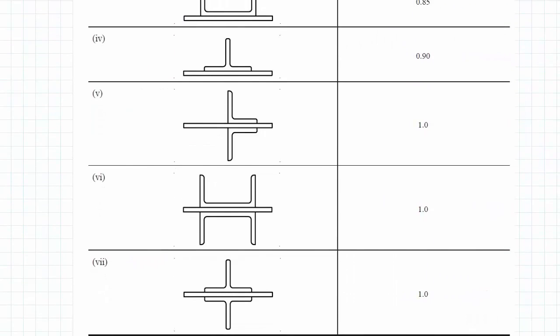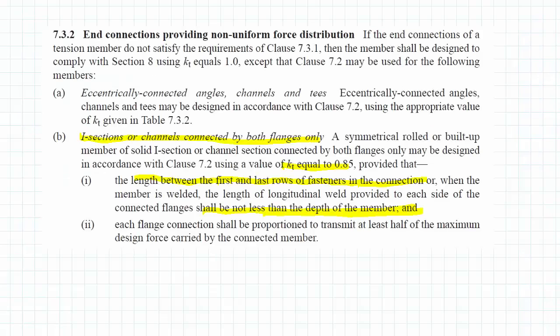So instead we refer to Clause 7.3.2, which can be found here. In Clause 7.3.2 there's a special section here for I-beams connected by both flanges only. For this case we can use kT equals 0.85, as long as the length between the first and last rows of fasteners in the connection is not less than the depth of the member.